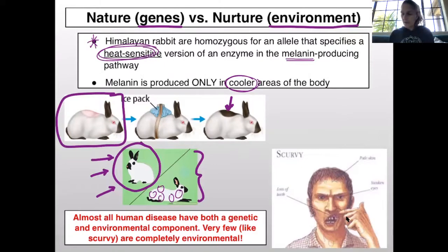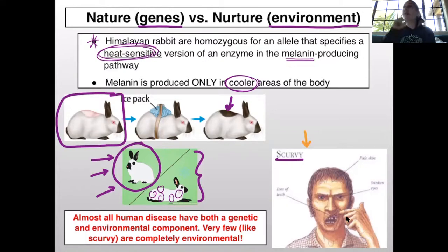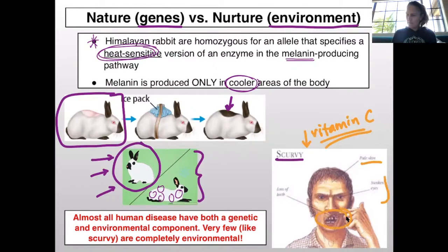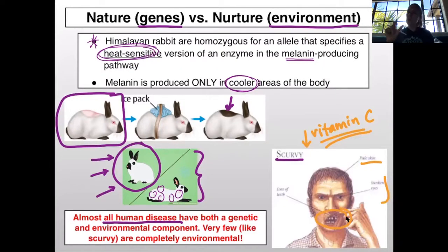Another example for humans is scurvy. Pirates used to get scurvy from a lack of vitamin C. Vitamin C is absolutely required in our bodies, and without enough you get scurvy — losing teeth, pale skin, shrunken eyes. Almost all human diseases have both a genetic and an environmental component. Very few, like scurvy, are completely environmental. Almost all have both genetic and environmental factors.